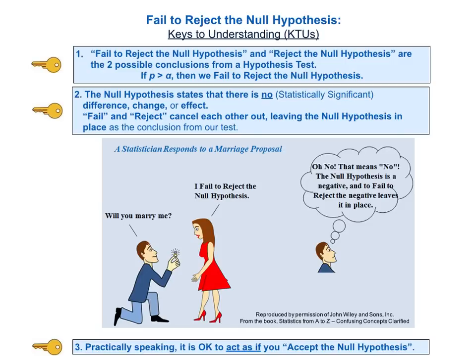And here, in case it makes it more memorable, we've added a preview of the outcome of the marriage proposal scenario. Her response of failing to reject the null hypothesis actually rejects the marriage proposal. We'll soon explain exactly how that works.